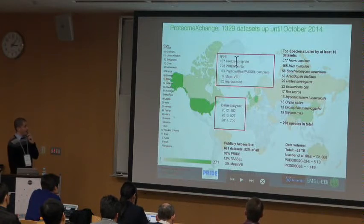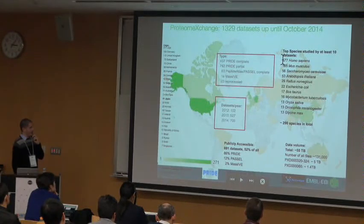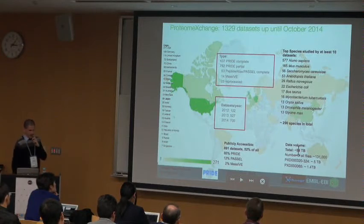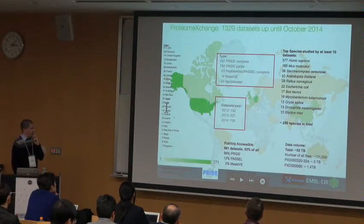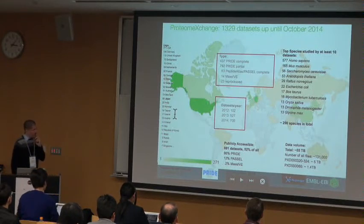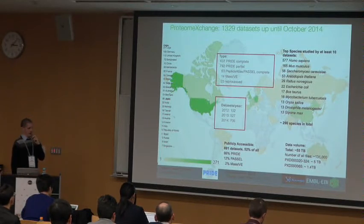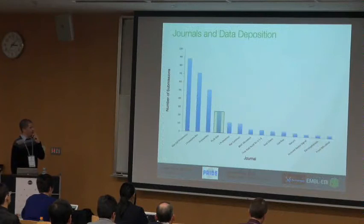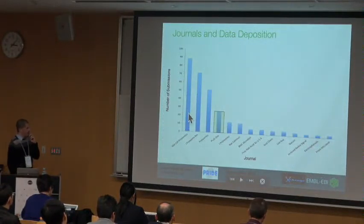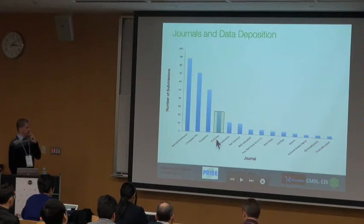The number of datasets is growing — we are close to having more than 500 projects submitted. The volume of data is also growing. Submissions are well distributed around the world, which is interesting because it is getting more and more popular for researchers to provide their raw data alongside publications. This graph about adoption by journal shows, for example, that PLOS ONE — not even a core proteomics journal — contains more than 20 ProteomicsExchange submissions.